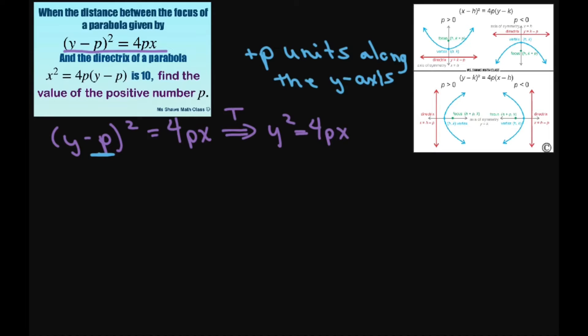Alright, since y² = 4px, that's your p there, has a focus at (p, 0). That means for our equation (y-p)² = 4px has a focus at (p, p) because of this p units along the x-axis.